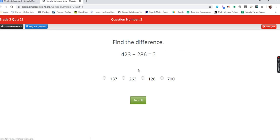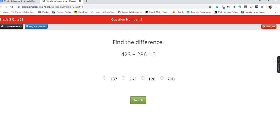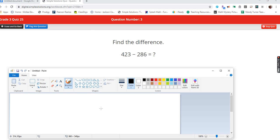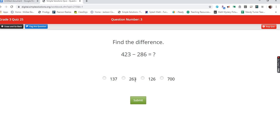Find the difference. 423 minus 286. Let's bring this up so we can use it. So we have 423 minus 286. I cannot take six from three, I'm going to borrow from that two. Thirteen minus six is seven. I can't take eight from one, so I have to borrow from the four. Eleven minus eight is three, and three minus two is one. One hundred and thirty-seven.